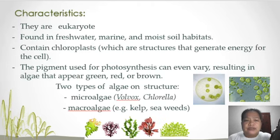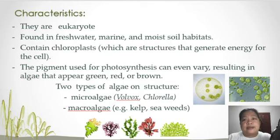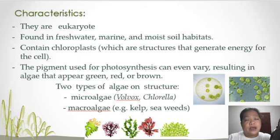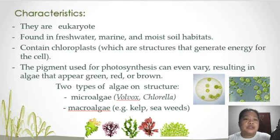This group belongs to the eukaryotic type of cell domain, except for the cyanobacteria, or cyanophyta, which are likely inclined to the prokaryotic domain. Most of these groups are usually found in freshwater, marine, or any moist soil habitats.